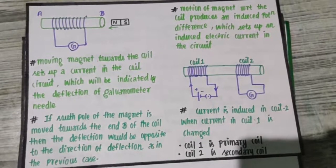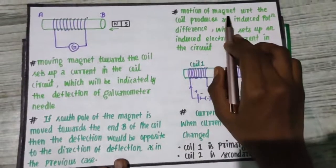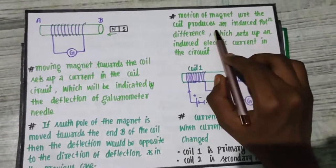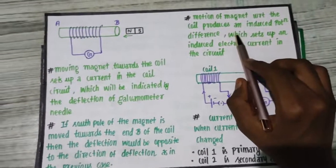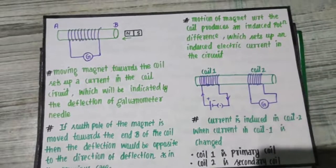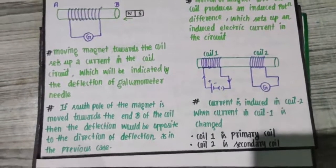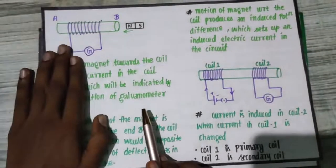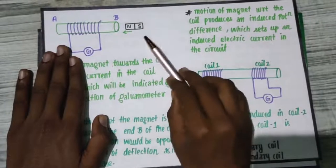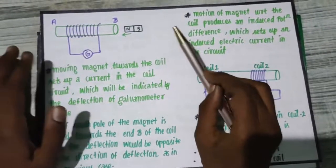The motion of the magnet with respect to the coil produces an induced potential difference which is stirred up and induced electric current in the circuit. Next, if you ask what you do, one of the conductors will be used to the magnet, then the current induced current will be induced and that will be used to the galvanometer and detect it.